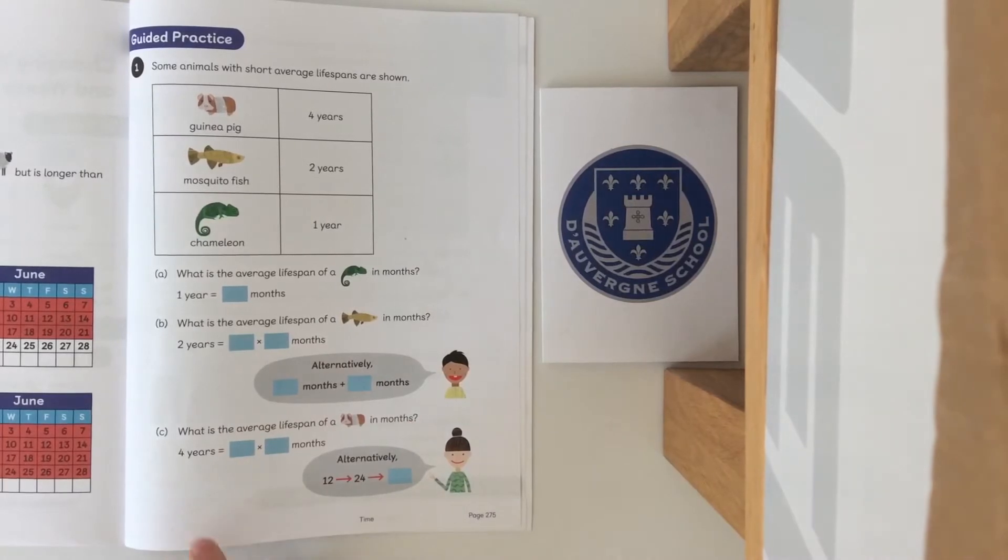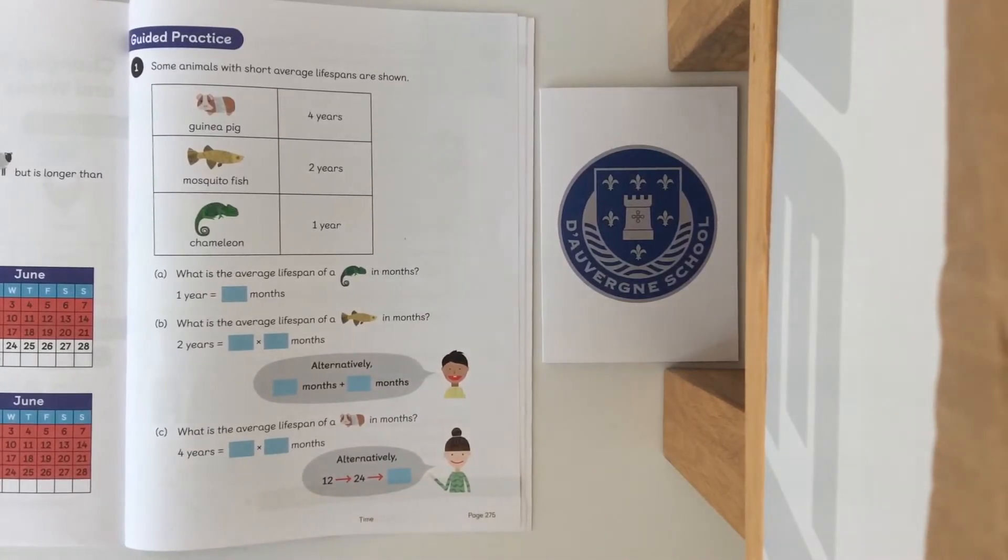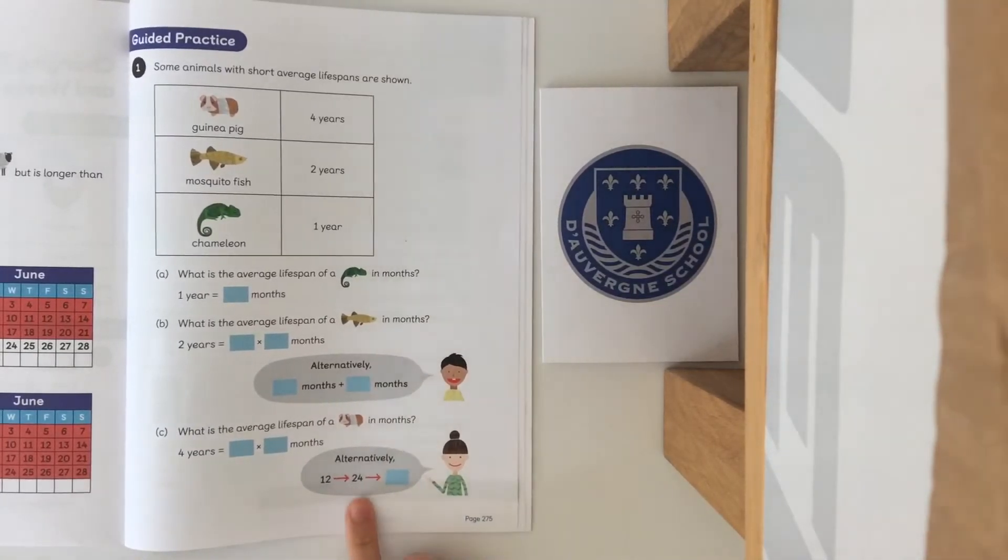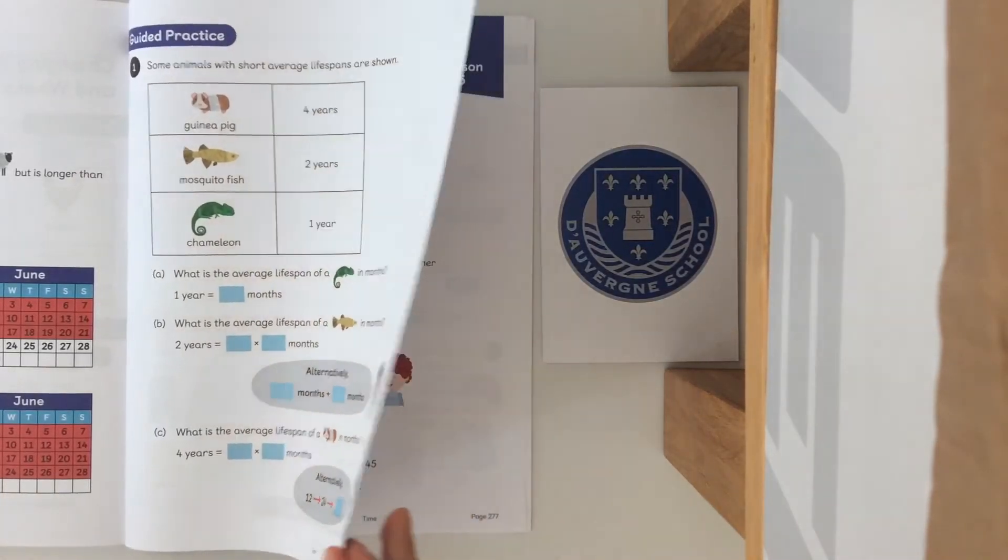Question C: four years equals four times 12 months. You could have counted in your 12 times tables: 12, 24, 36 and continued. There's different methods you could use - multiplication or repeated addition. Here we're not actually looking for the answer, we're looking for how to get to the answer.